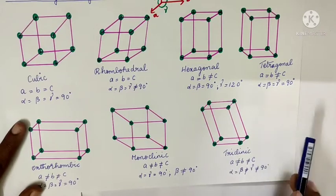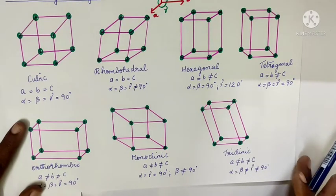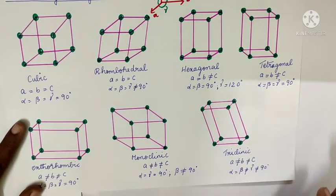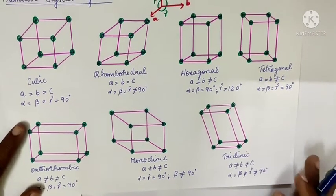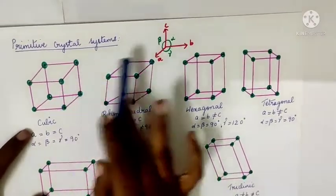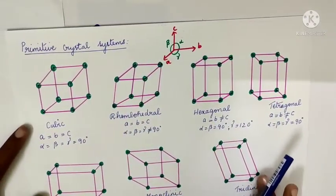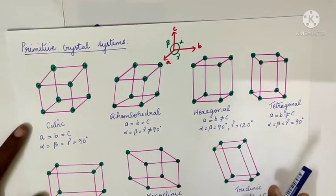For triclinic: edge lengths are not all equal, and angles are not equal to 90 degrees. So these are the seven types of primitive crystal systems. Thank you.